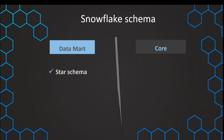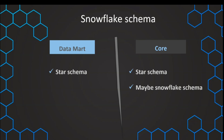Therefore, a snowflake schema is not what we usually want to use in our data mart if we can avoid it. In our data mart we usually want to go with a star schema — that is the better option. In the core, it is also usually better to model the data after a star schema. But if we have real problems with write operations making it difficult to maintain, or if storage cost is a challenge in some very rare cases, then we can use the snowflake schema in the core. Still, it's good to have this concept understood so you know what it is if you happen to see it.